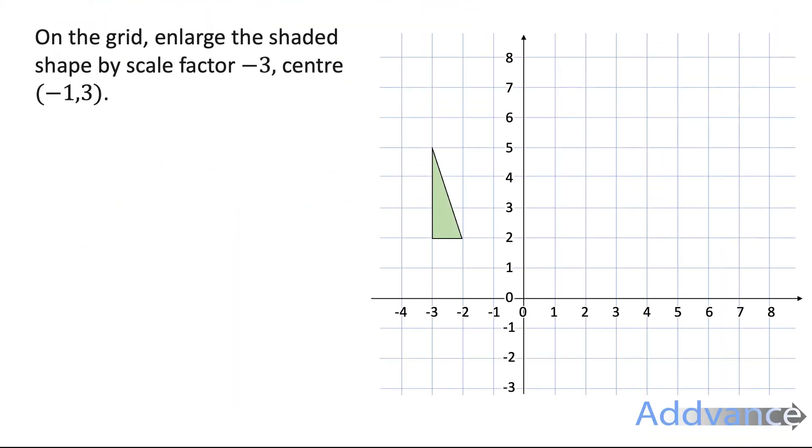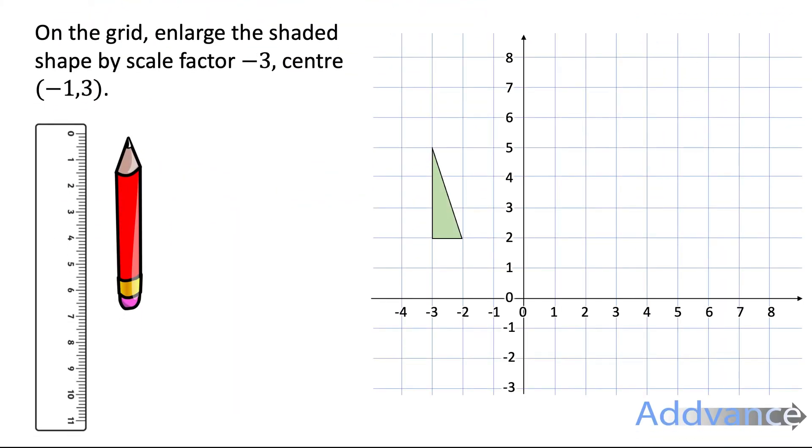Now we're going to look at a slightly different example. On the grid enlarge the shaded shape by scale factor -3 and centre (-1,3). This is a negative scale factor and I want you to pay attention to what the negative does. So firstly we mark on the coordinate (-1,3), and that's the centre.